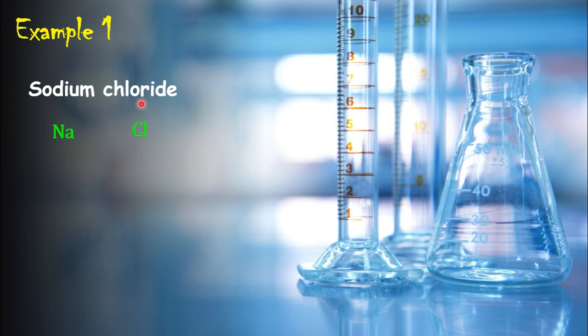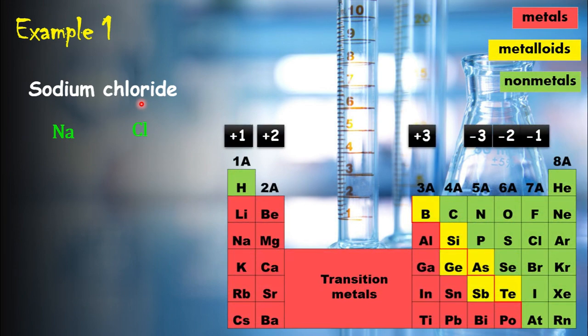Our second step is to write the charges of cations and anions, so we need to recognize those charges. We can use the periodic table because both sodium and chlorine are simple ions. By looking at the periodic table we can identify the charges of simple ions — these are the charges you need to have memorized.